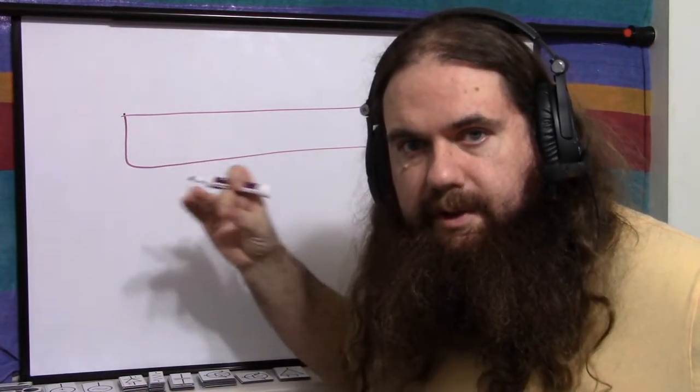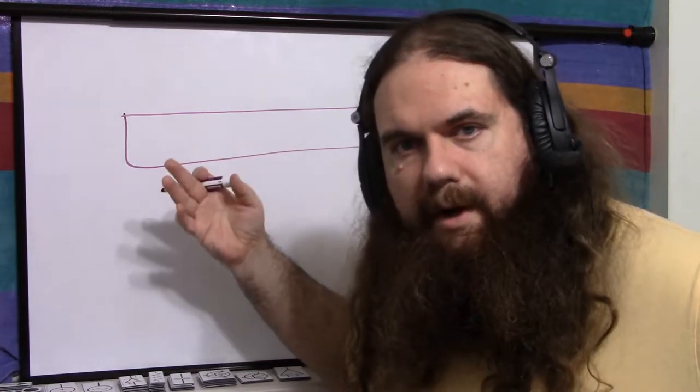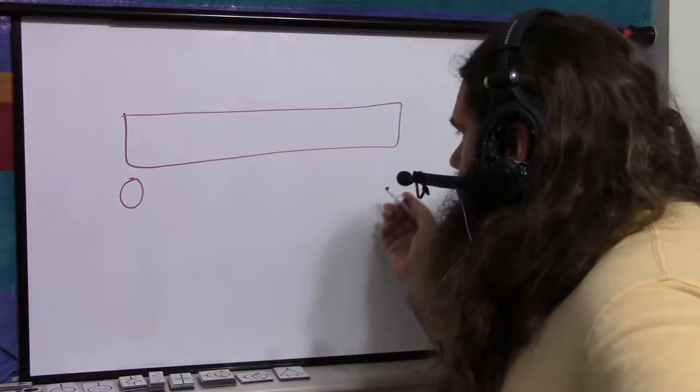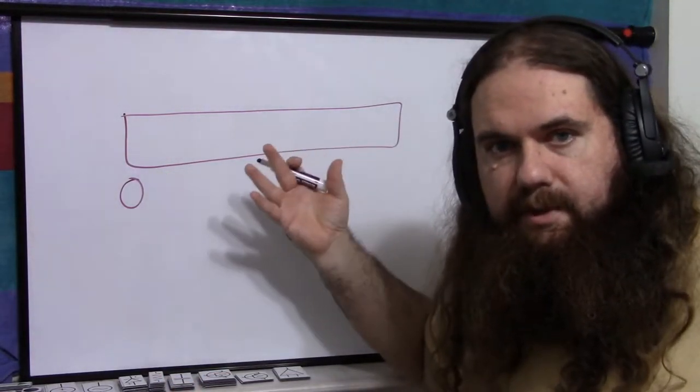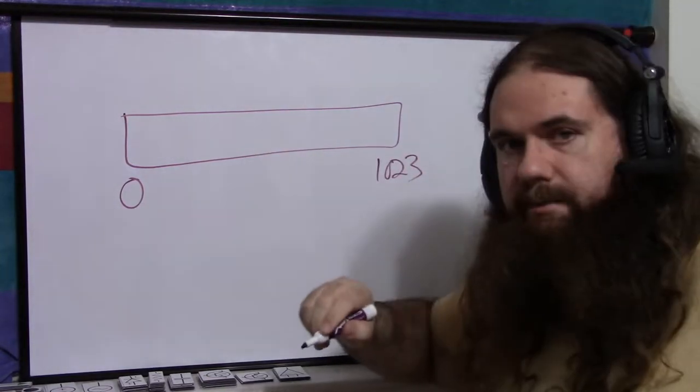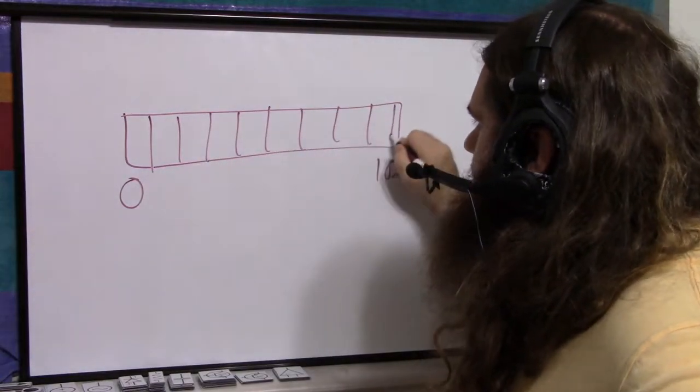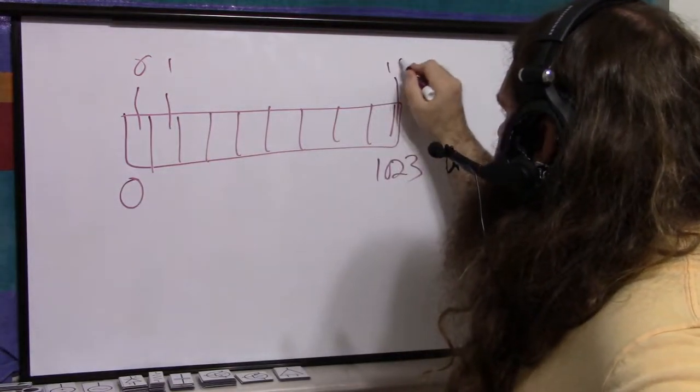So the input is going to be your analog voltage, and the output is going to be a binary number. Zero is going to represent the low end, and whatever is going to represent the high end. So if it has a 10-bit resolution, it puts out 10 bits, then 1023 is going to be the high end. What happens is it divides it up into that many slices, and this slice is zero, this slice is one, this slice is 1023.